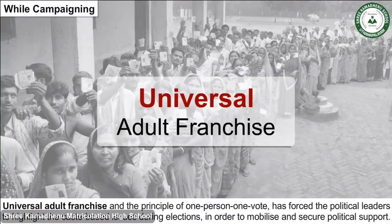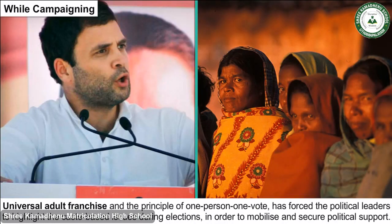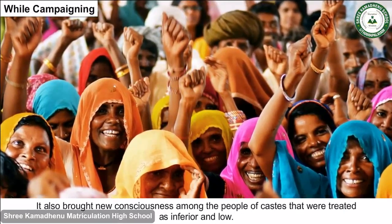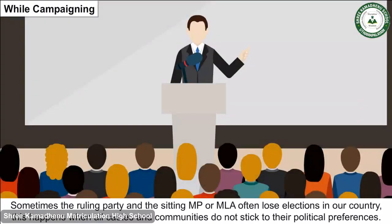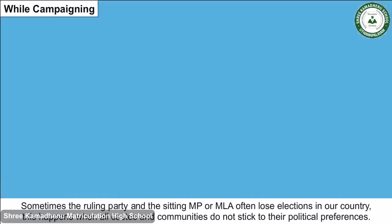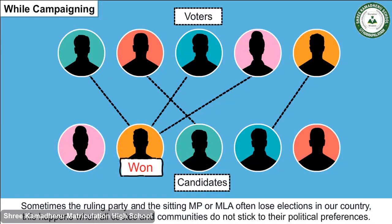Universal adult franchise and the principle of one person one vote has forced political leaders to highlight caste-based issues during elections in order to mobilize and secure political support. It also brought new consciousness among people of castes that were treated as inferior. Sometimes the ruling party and the sitting MP or MLA lose elections when all castes and communities do not stick to their political preferences.